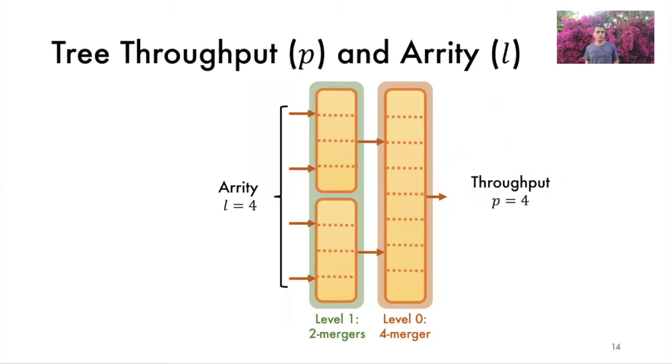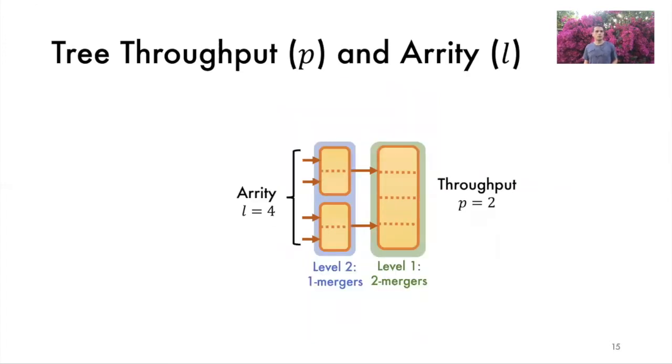As an example, if we remove level 2 from the tree, the Arity drops to l equals 4 while the throughput is still equal to 4. If we now change the mergers at level 1 from 2 mergers to 1 mergers and the merger at level 0 from a 4 merger to a 2 merger, the tree throughput p drops to 2 while the Arity is unchanged.